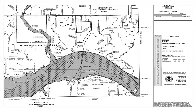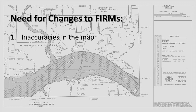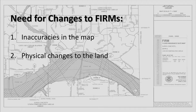Flood insurance rate maps, or FIRMs, may need to be changed for a variety of reasons. Most reasons for requesting a change to a FIRM stem from one of two causes – inaccuracies in the map, or physical changes made to the floodplain since the creation of the map.